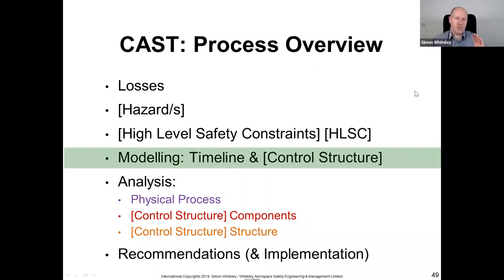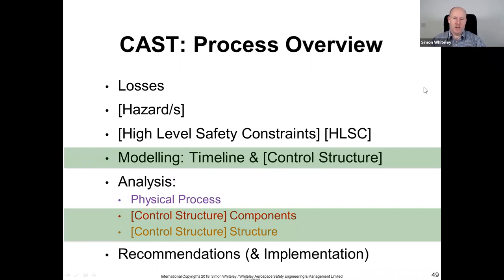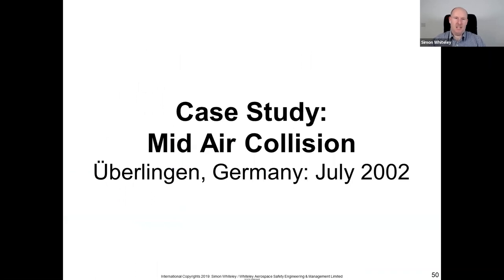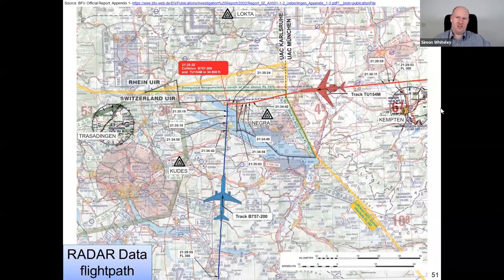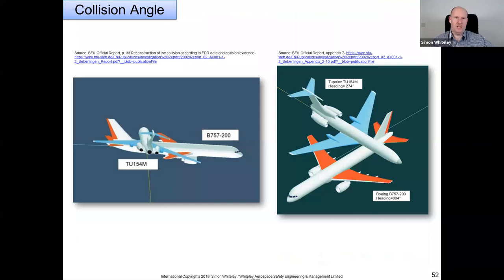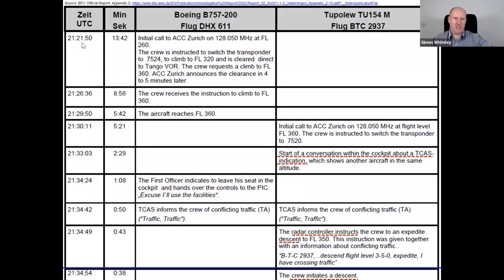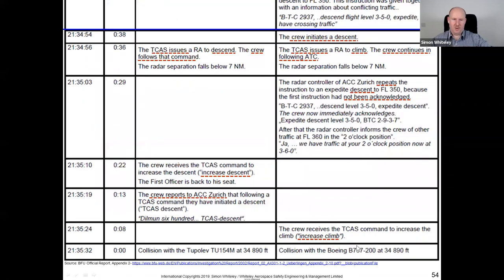Our case study is the mid-air collision at Uberlingen, Germany, in July 2002. About half past nine in the evening — a dark night — two aircraft operating in German airspace essentially collided with each other mid-air, resulting in deaths of everybody on board and destruction on the ground. From 21:21 through to the collision at 21:35, over the space of about 15 minutes, two perfectly working aircraft — a Boeing 757 for DHL and a Tupolev Tu-154 for Bashkirian Airlines — ended up in a collision mid-air.